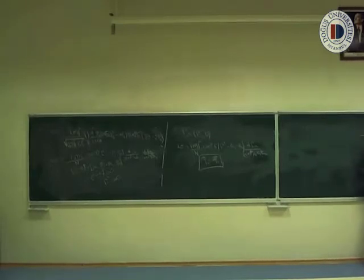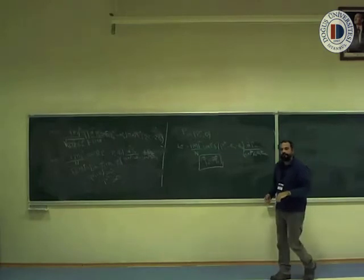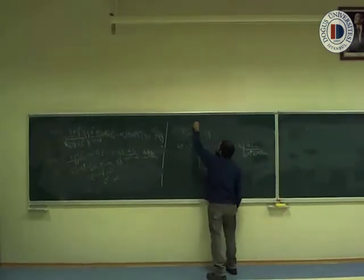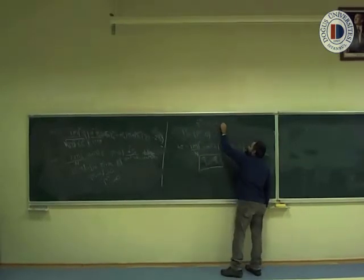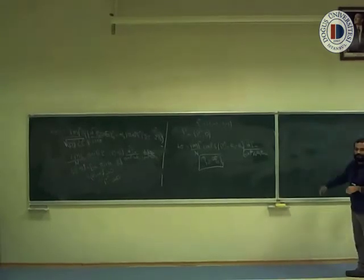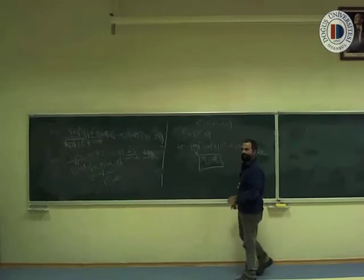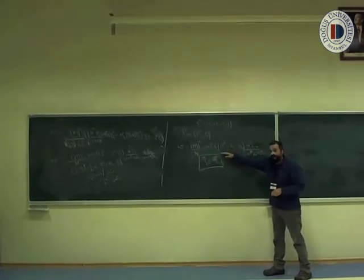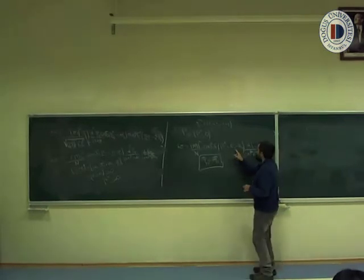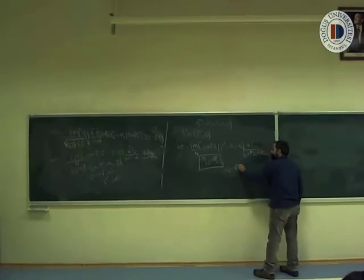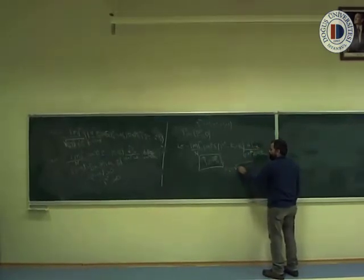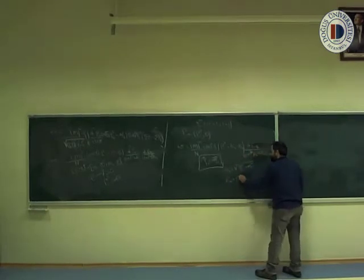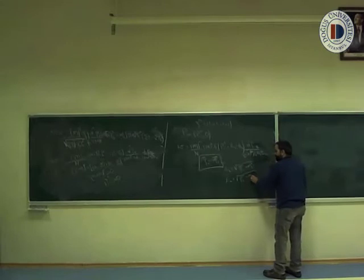I still have one more Dirac delta appearing over there that I haven't used anywhere yet. My metric convention will be (+, −, −, −). There is one more Dirac delta which I can use to calculate one of these integrals. If you remember, e₁ is the square root of p₁² + m₁², and e₂ is the square root of p₂² + m₂².